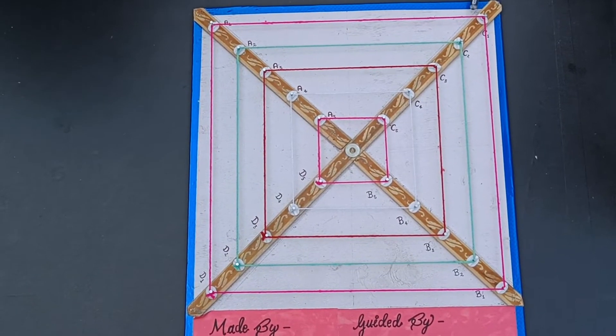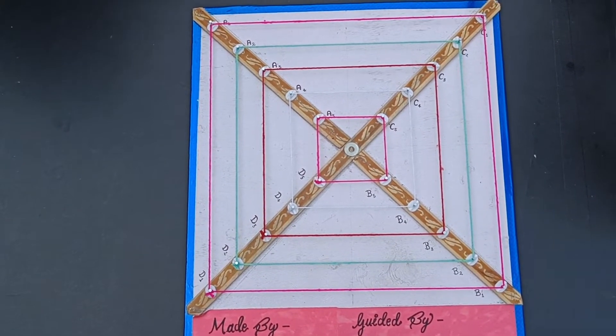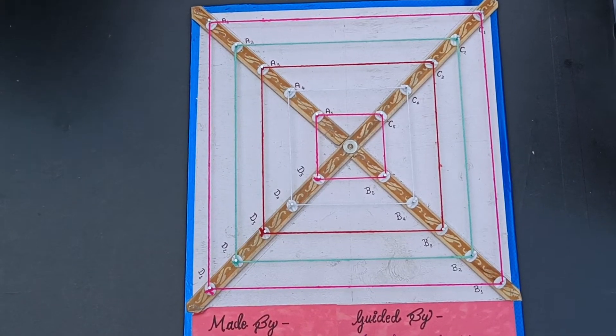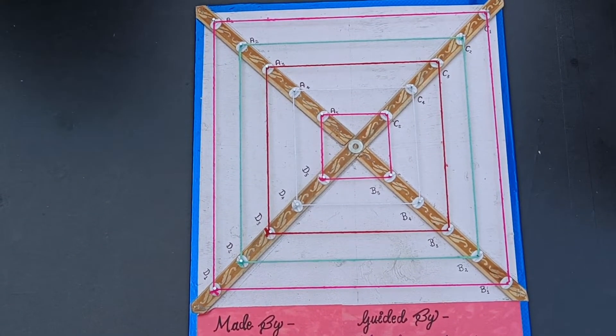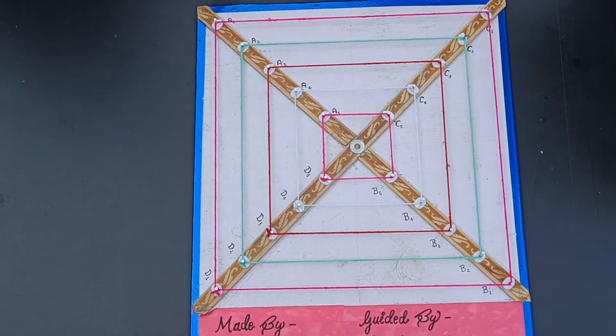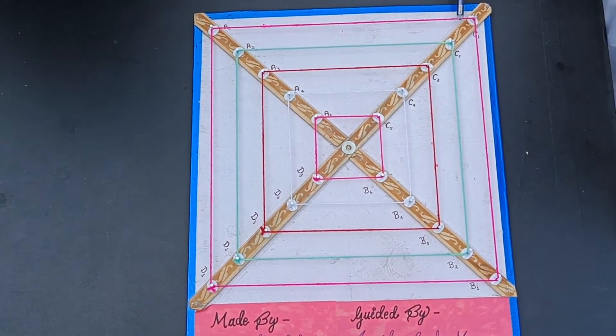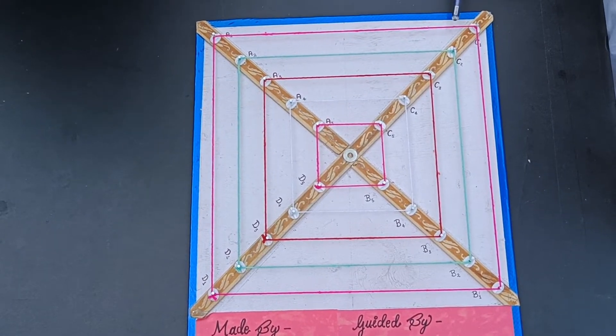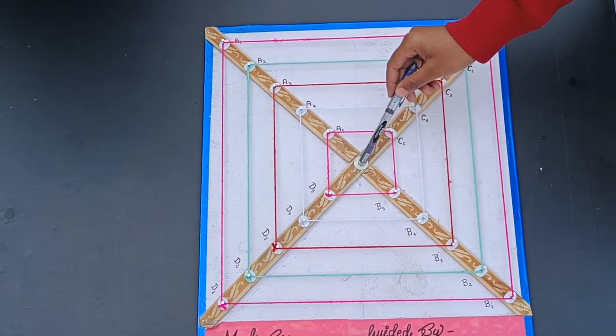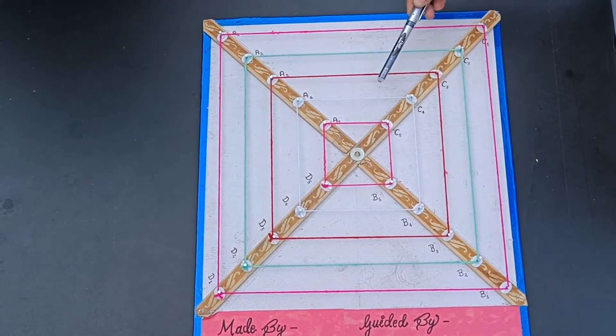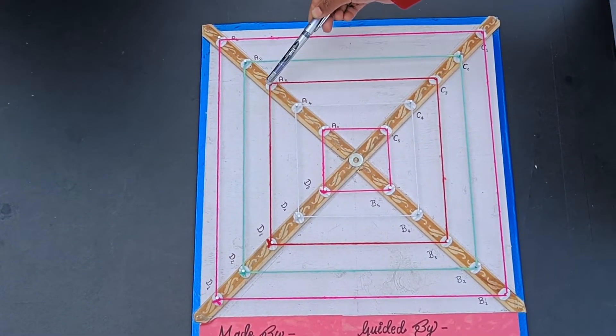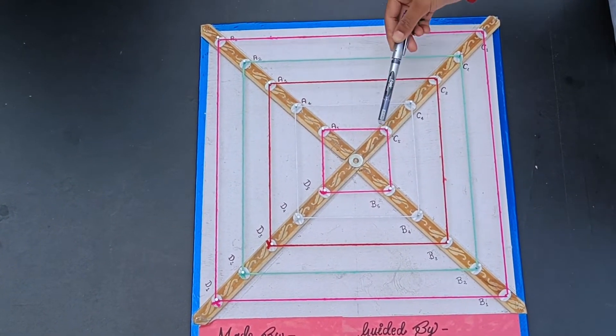For understanding the concept of similarity, we make a set of similar squares here. For making this, take two wooden strips, say AB and CG. Join both strips, intersecting each other at right angle at the point O. Fix nails at equal distance on each of the strips, and name them.